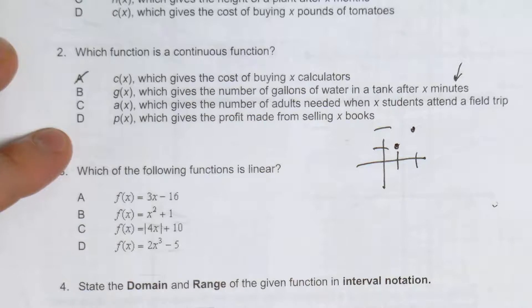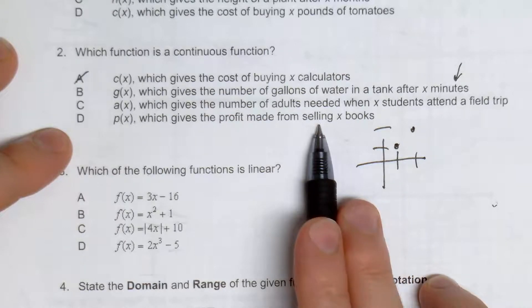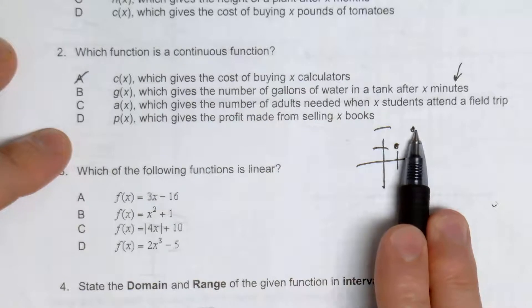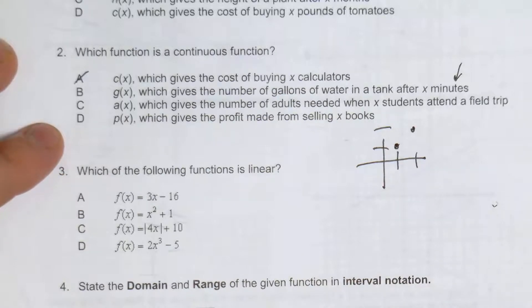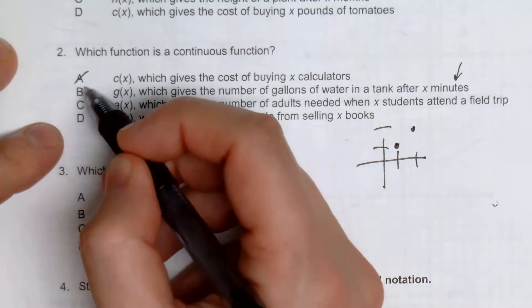What gives the profit made after selling X books? We could say the same thing. Sell one book, $5. Sell two books, $3. The only thing that would be continuous is B.